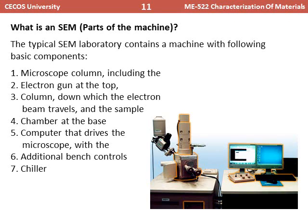Here is a picture of a scanning electron microscope available in a laboratory. It has different parts: the microscope column with the electron gun at the top, the column that guides the electron beam from the gun toward the sample, a chamber at the base, a computer that drives the microscope, additional batch controls, and a chiller to cool the electronic parts. The chiller is normally placed outside the laboratory but connected to the SEM.